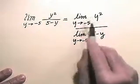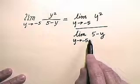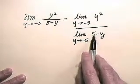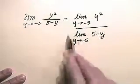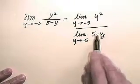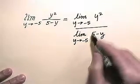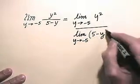Well, our difference rule tells us that the limit of this expression, five minus y, is the difference of the limits. Well, the limit of five is obviously five, and the limit as y approaches negative five of negative y. What is that?